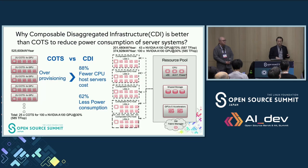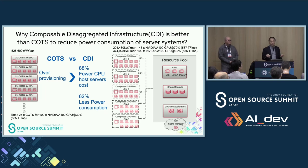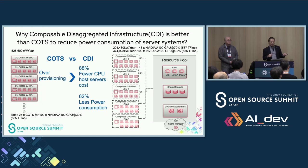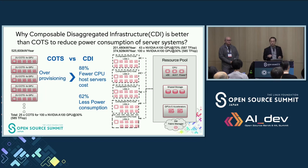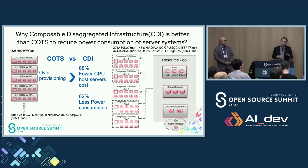For example, if the customer needs 585 teraflops using 100 GPUs, traditionally 25 code servers with 4 PCI slots each would be required. With CDI, the same performance can be achieved using only 5 CPU hosts with 100 GPUs. This approach reduces server cost by 88% while also lowering power consumption. This is one of the main benefits of the Composite Disaggregated Infrastructure.